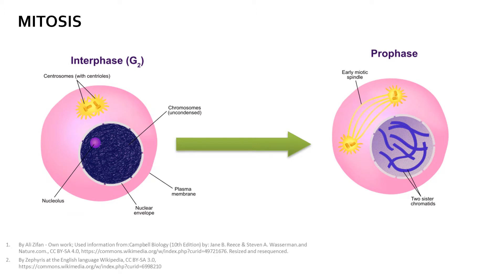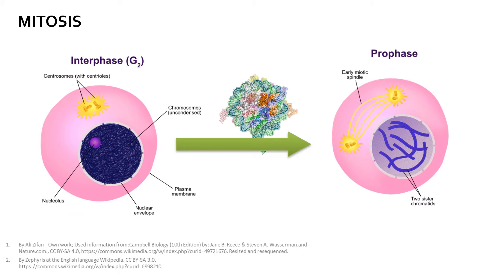Prophase follows the last phase of interphase, or G2. Here, chromosomes condense by winding DNA around chromatin, begin bringing the strands together into tightly packed orderly arrangements, and in addition to that, the nucleolus disappears, allowing chromosomes to move within the nuclear membrane.